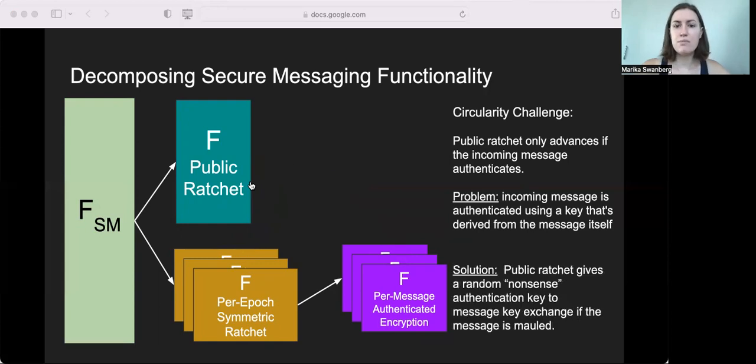All right, so to break the circularity between these modules, we have the public ratchet functionality give out random nonsense authentication keys to the message key exchange module if the incoming message was mauled. And crucially, these random junk keys are mutually pseudo-random. So the public ratchet then lets the caller decide when the public key is correct.